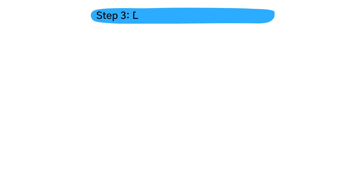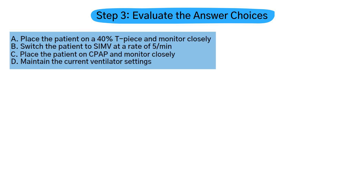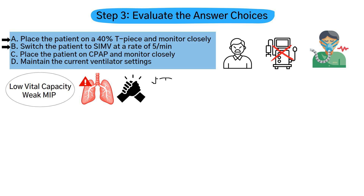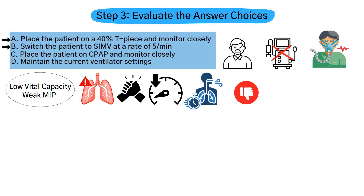Now for Step 3, we need to evaluate the answer choices. Option A, a T-piece trial, is too aggressive. Removing full ventilatory support in a patient with a low vital capacity and weak maximum inspiratory pressure could result in respiratory failure. Option B, SIMV at 5 breaths per minute, would be considered a premature reduction of support. Lowering the rate significantly increases the patient's work of breathing, which may not be tolerated.